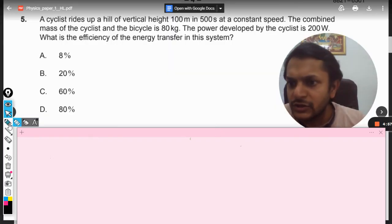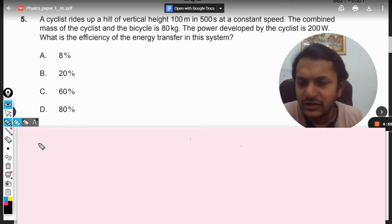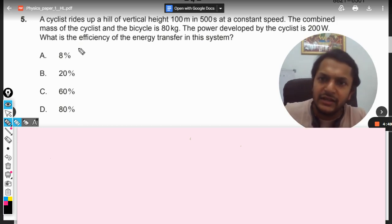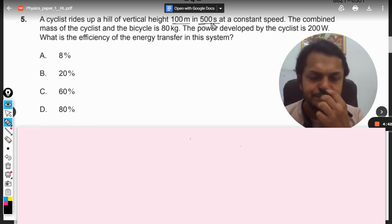Okay dear students, this is a question from work energy power, and this question is about power. So let us see: a cyclist rides up a hill of vertical height 100 meters in 500 seconds at constant speed.